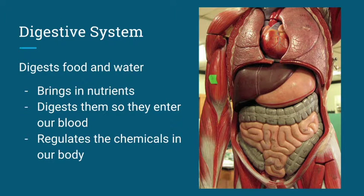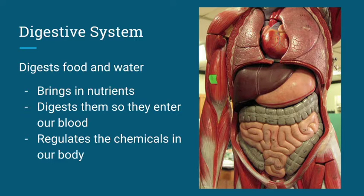Next up we have the digestive system. Your digestive system has the primary function of breaking down all of the nutrients that you consume and making them small enough so they can enter your bloodstream. Your digestive system mostly brings in all of the nutrients and helps to regulate all the chemicals that are necessary in our body.